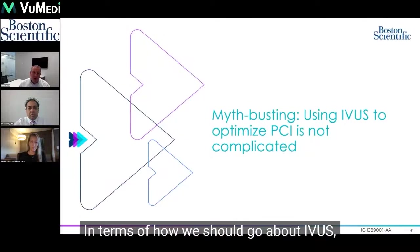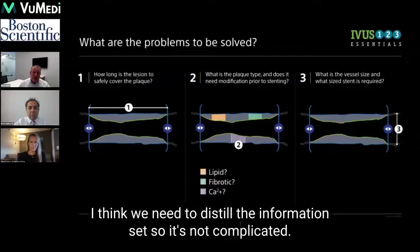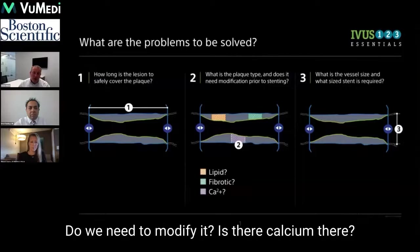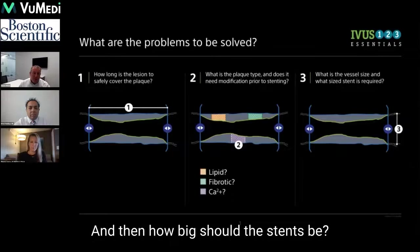In terms of how we should go about it, I think we need to distill the information set so it's not complicated. We ask three basic questions before a procedure: how much plaque are we covering? Do we need to modify it — is there calcium there? And then, how big should the stents be?